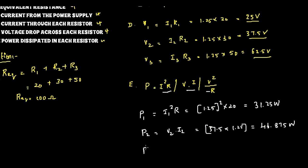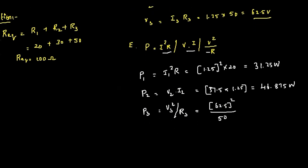For P3 you can use the third formula, V3 square by R3. So that is equal to 62.5 square divided by 50. So 62.5 square gives you around 3900, that divided by 50 will give you 78.125 watts.